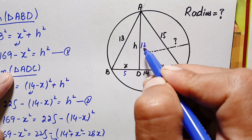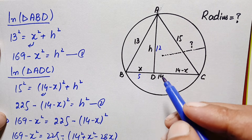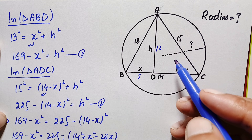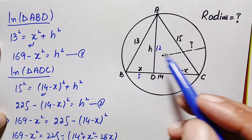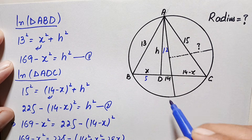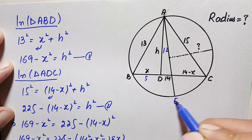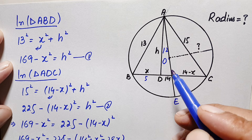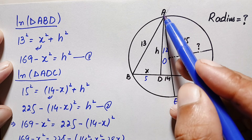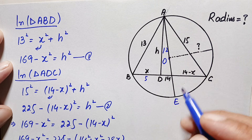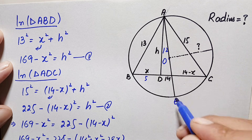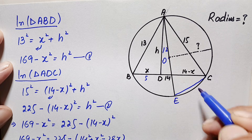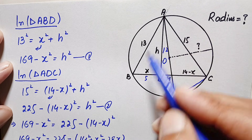Now our next target is to find out the radius of this circle. To do this, we will draw a diameter on this circle from point A. Let us suppose this is point E, and let us suppose O is the center of this circle. To find the radius, we will try to find the value of segment AO or OE. We will connect point E with point C.